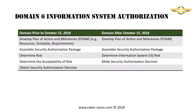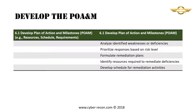Domain 6 will remain relatively unchanged with the removal of one subject area: determine the acceptability of risk. Prior to October 15th, the subject areas are: develop plan of action and milestones, assemble security authorization package, determine risk, determine the acceptability of risk, and obtain security authorization decision. After October 15th, the subject areas are: develop the plan of action and milestones, assemble the security authorization package, determine information system risk, and make security authorization decision.